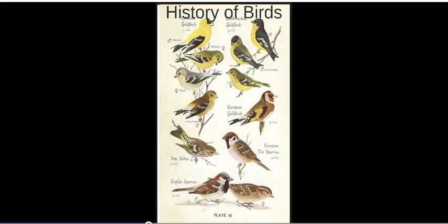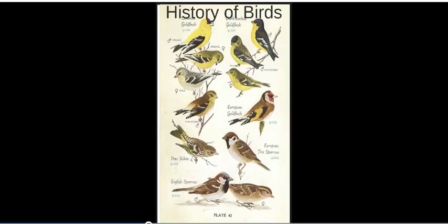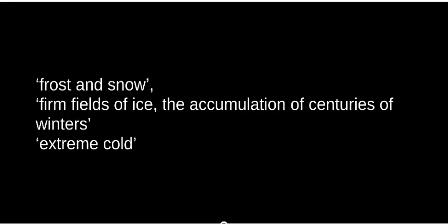In the extract from Bewick, there are multiple images of coldness and death. We see frost and snow, firm fields of ice, the accumulation of centuries of winters, extreme cold. This is a semantic field — a group of thematically linked words — which emphasise Jane's position as an orphan, as it's a metaphor for how she's frozen out of the Reed family.